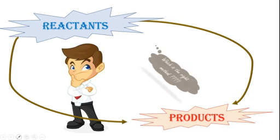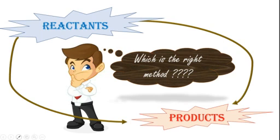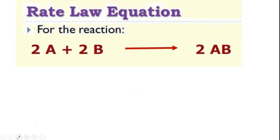Now, you might be puzzled — which is the right method? Both are right. Whether to depend on method 1 or method 2 depends on the data that is provided in the question. Both give you the same value because we are dealing with the same reaction. Be it method 1 or method 2, it has to give us the same value. So, before we proceed forward to find how to calculate the rate based on the rate law equation, let's see what is this rate law equation or rate law expression.